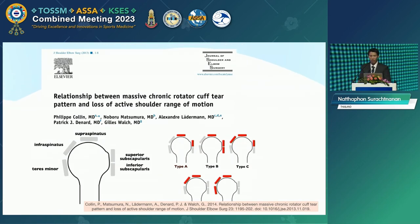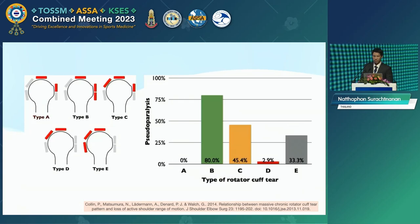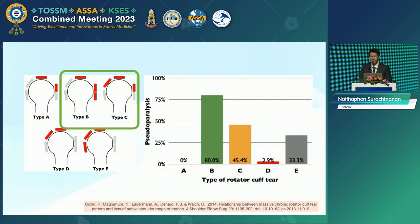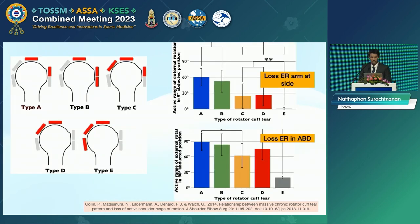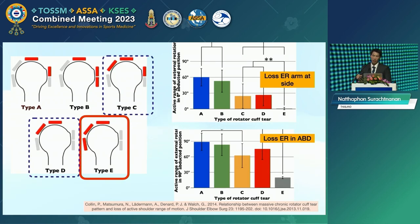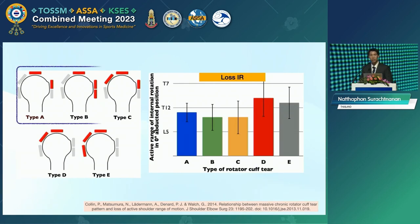He classified five patterns of tear, in patterns A through E. The study shows that in type B and C, there is a higher percentage of the pseudo-paralysis problem. There is loss of external rotation function in both arm at side and 90-degree abduction. The hornblower sign is found in type E, and loss of abduction in type C and D. The loss of active internal rotation motion was found in types A, B, and C.